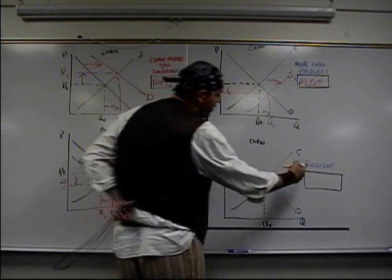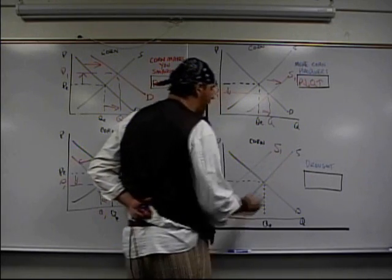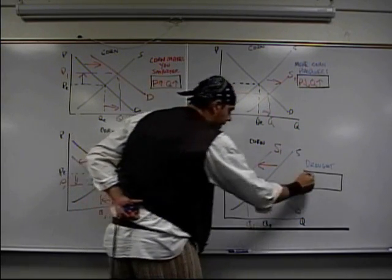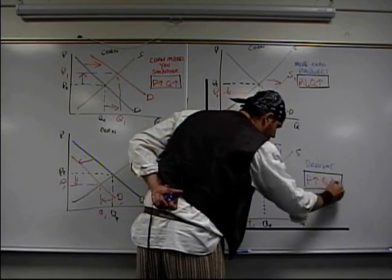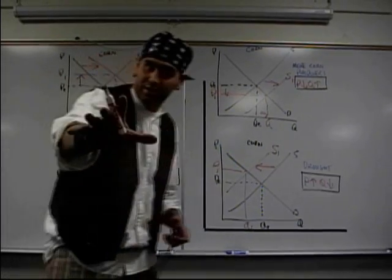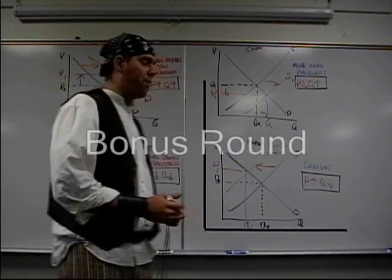And here for our last one, there's a drought. That's a decrease in supply, shifting the curve to the left. P1 and Q1: price goes up, quantity goes down. 60 seconds, a little over. Hey, until next time. Wait a second, let's slow down. Let's have a bonus round.